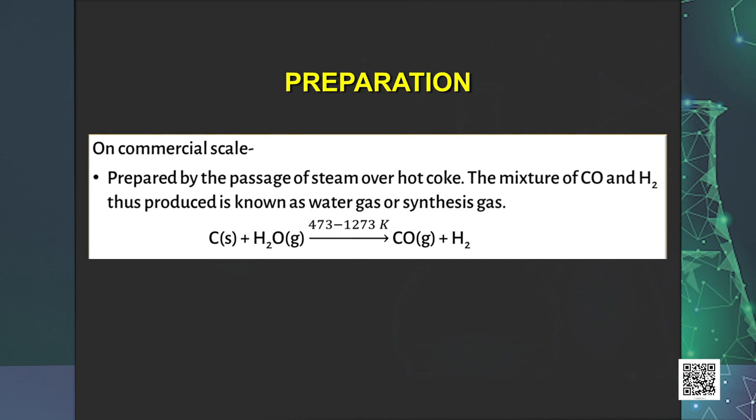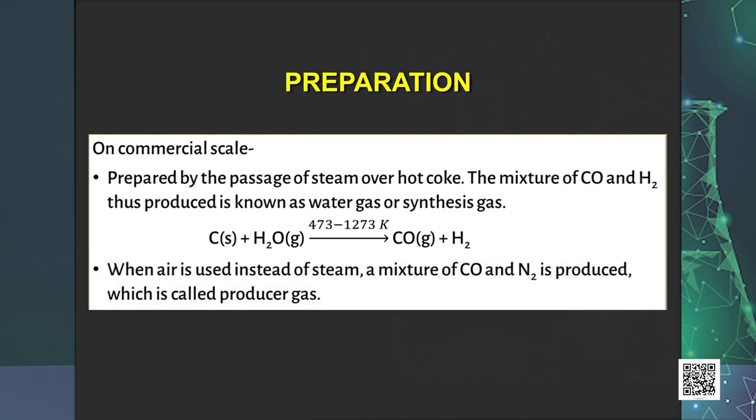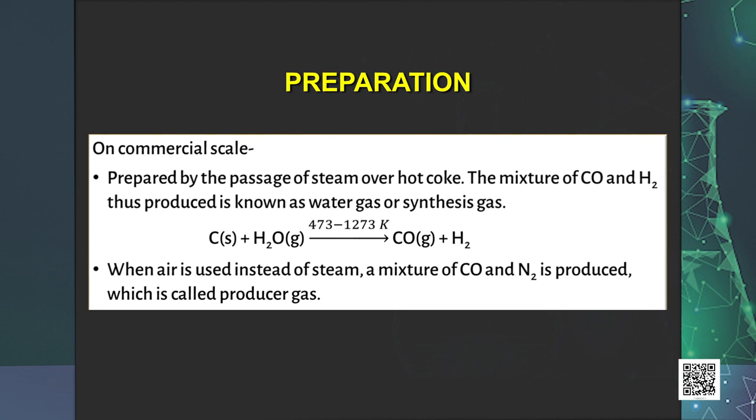When air is used instead of steam, a mixture of CO and N2 is produced which is called producer gas. The reaction is 2C plus O2 plus 4N2 at 1273 Kelvin giving 2CO plus 4N2. Water gas and producer gas are very important industrial fuels. Carbon monoxide in water gas or producer gas can undergo further combustion forming carbon dioxide with the liberation of heat.